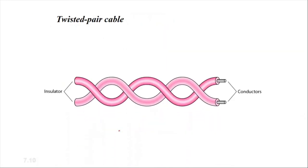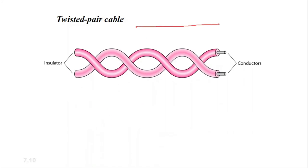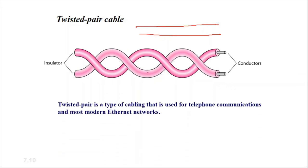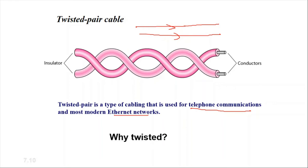A twisted pair cable is a pair of wires that are twisted together — not just parallel. There is a conductor inside and an insulator on the cable. The twisted pair is used for telephone communication and most modern internet networks. Why is it twisted rather than parallel? Because when two wires are parallel, the magnetic field of one wire can affect the other, causing electromagnetic interference and crosstalk. By twisting them, we increase the cancellation of interference and thus decrease the crosstalk.